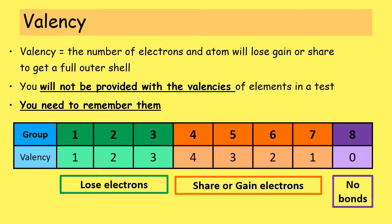Now, valency. Valency is a term you would probably have looked at when you studied atomic structure. Valency is the word we use to describe the number of electrons that an atom will gain, share, or lose in order to get a full outer shell. In your data booklet you're given lots of information about elements, but valency is not one of them. So valency is something you need to be able to remember or work out from an element's position in the periodic table.